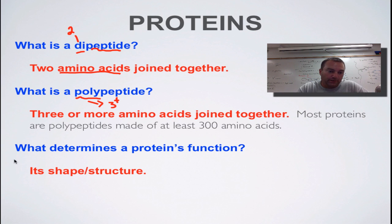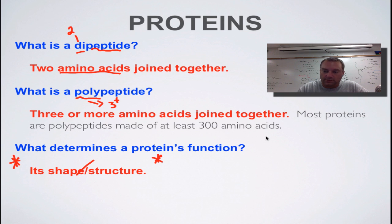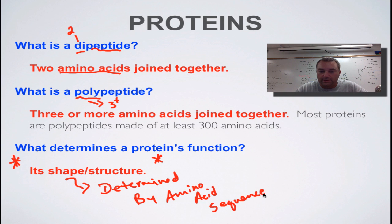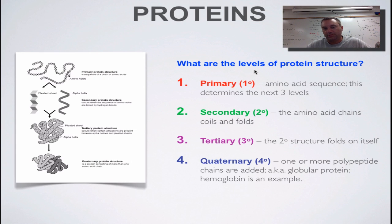Here's something really important to remember: what determines a protein's function? Its shape and its structure — shape determines the function. And what determines the shape? The shape is determined by the amino acid sequence. Remember that train with 300 cars? You can put those cars in pretty much any order. Depending on what arrangement they're in, that's going to determine the shape of that protein. Shape determines the function of a protein.